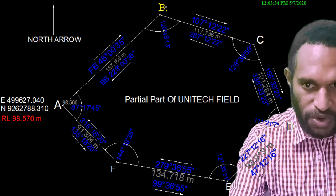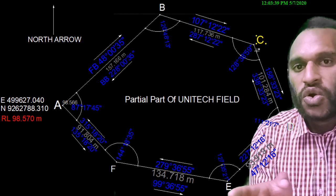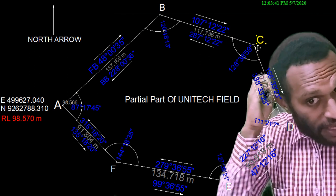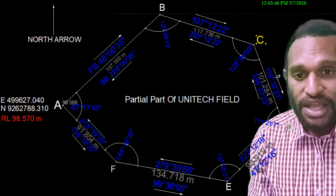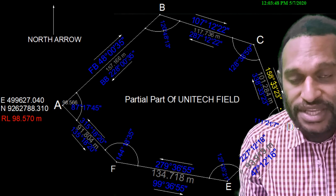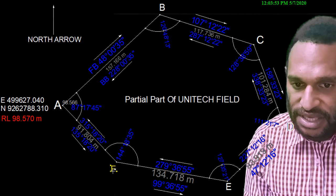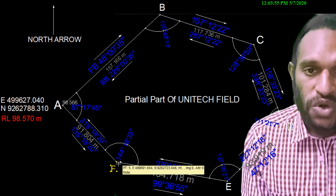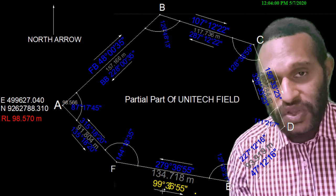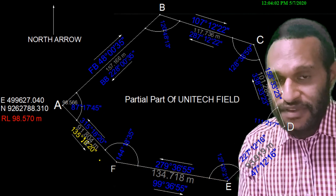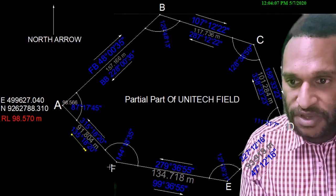After we identify the coordinate of point B, we will use that coordinate to identify the coordinate of point C. After identifying the coordinate of point C, we will identify the coordinate of point D. After D, we will identify point E, and after E, we will identify the coordinate of point F. You can do this vice versa — you can go anti-clockwise or clockwise, as long as you have the bearing lines and the distance known.